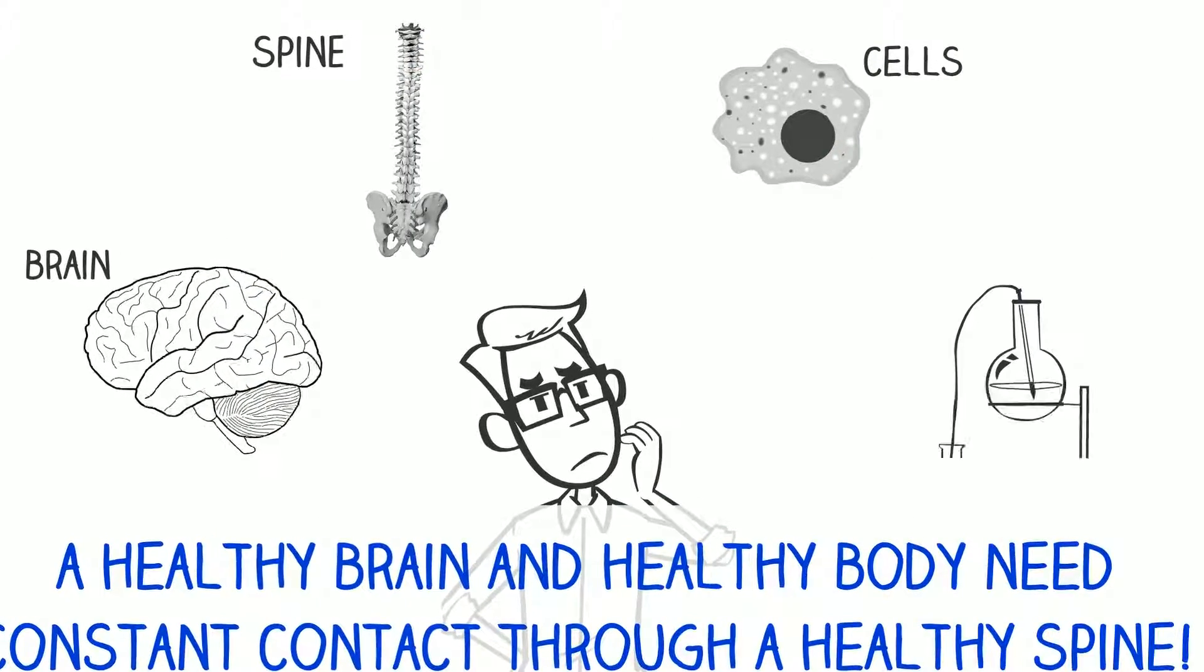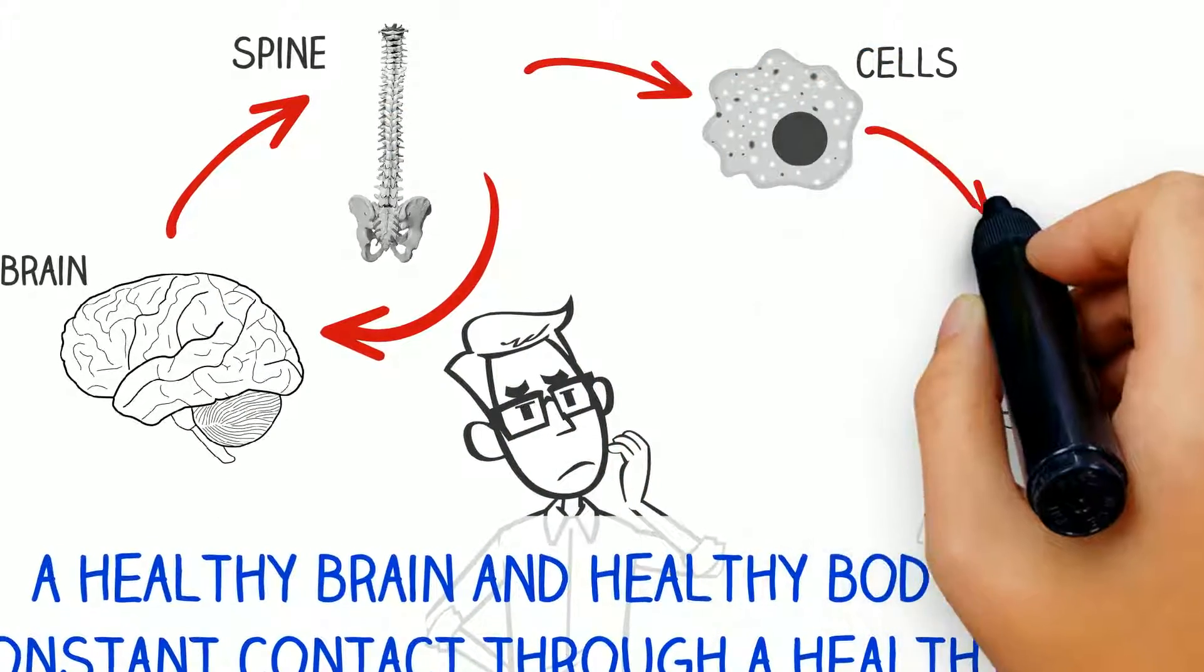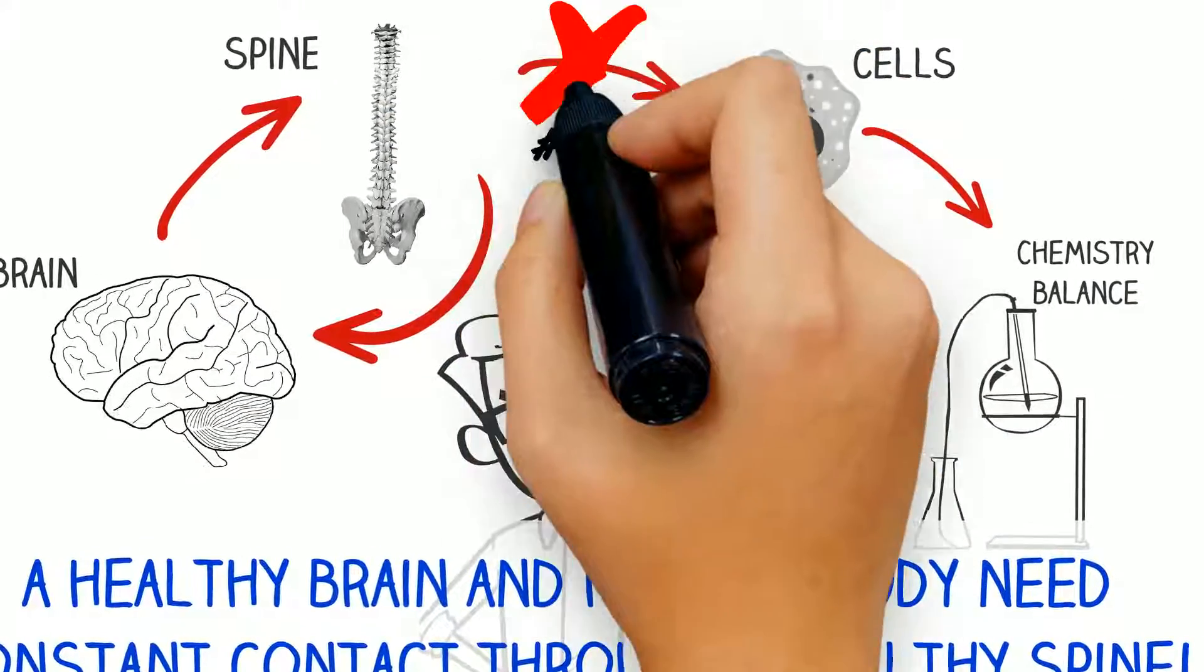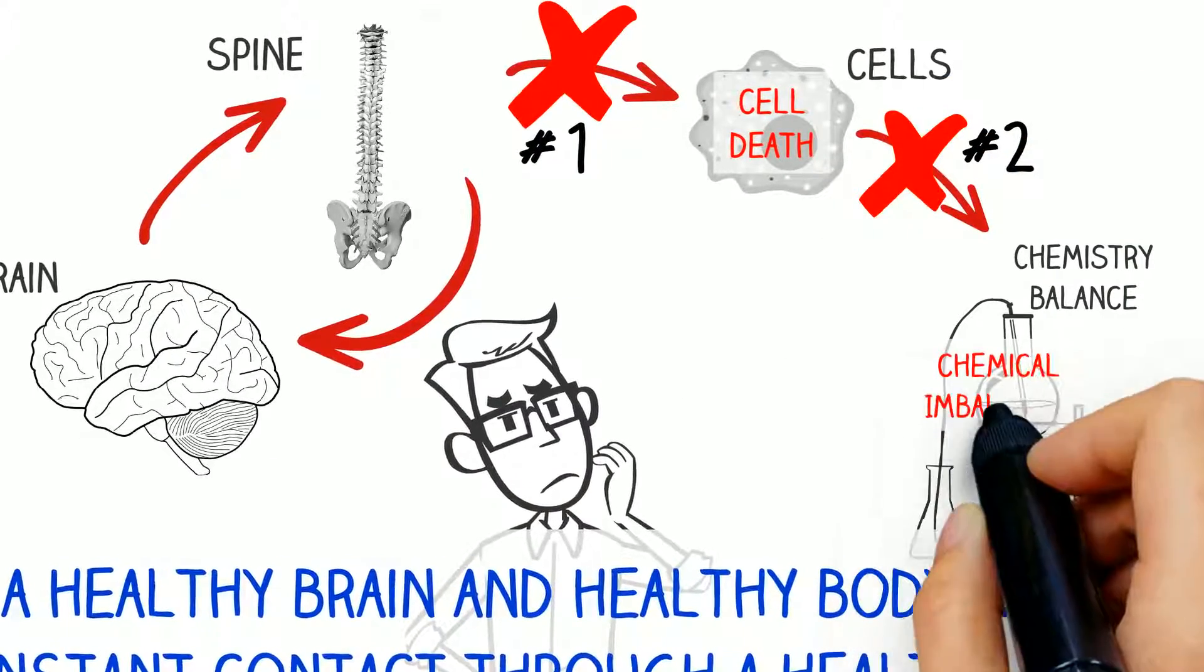First, when signals from the brain to the body are choked off by a subluxated spine, that robs the cells of trophic nerve impulses causing cells to die. In turn, sick glandular cells result in chemical imbalance.